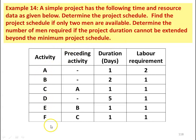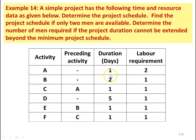There are six activities: A, B, C, D, E, and F. Activities A, B, and D are the initial activities with no preceding activities. For activity C, the preceding activity is A. For activity E, the preceding activity is B. For activity F, the preceding activity is C. The duration for each activity in number of days is: 1, 2, 1, 5, 1, and 1. Labor required: for activity A, two labors are required; for all the other activities, one labor is required.